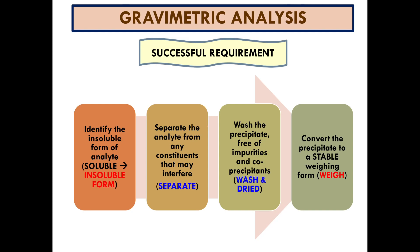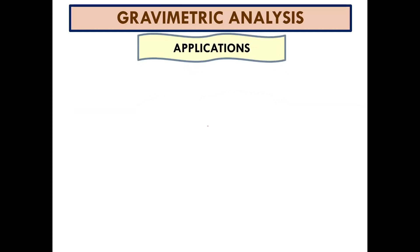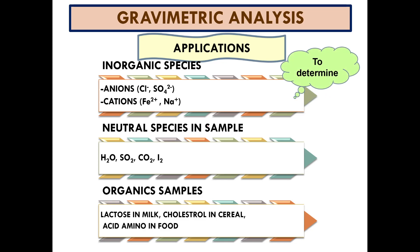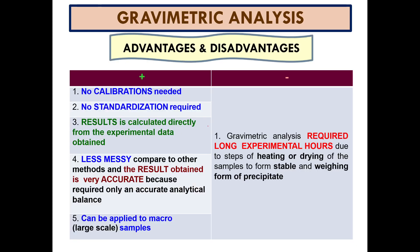The application of gravimetry analysis is to determine inorganic species, for example anions such as chloride ion and sulfate ion, and cations such as iron and sodium. You can also determine neutral species in a sample — for example, the amount of water in a sample, the amount of SO₂, CO₂ (carbon dioxide), and iodide. Gravimetry analysis can also be applied to determine organic samples, for example the amount of lactose and cholesterol in cereal, and amino acids.